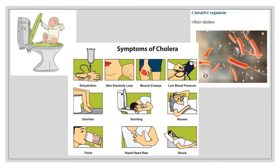Can you see this diagram? This is cholera. Cholera is caused by infected water — if we consume infected water, we suffer from cholera. Vibrio cholerae is the causative organism. The symptoms include dehydration, loss of skin elasticity, muscle cramps, low blood pressure, nausea, vomiting, diarrhea, thirst, rapid heart rate, and shock. So we need to be very careful.